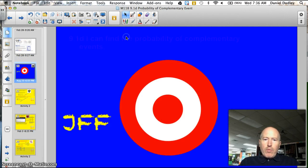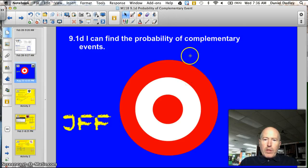Tonight, officially, our target is 9.1d. I can find the probability of complementary events. Let's build this thing.